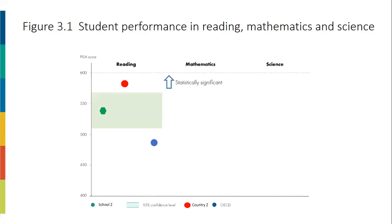If the difference is statistically different, the red dot and/or the blue dot will appear outside the green stripe. If it is not, the dots will appear inside. Why is this important? Because if it is statistically different, you can conclude that the difference in performance between your school and your country, or OST countries, is real. If it is not, then the difference could be due to noise or random variation. In this case, any conclusions about the difference should be treated with caution.